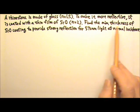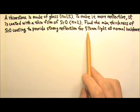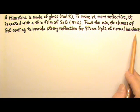Find the minimum thickness of silicon monoxide coating to provide strong reflection for 570 nanometer light at normal incidence.